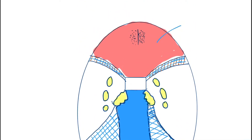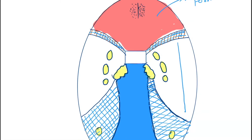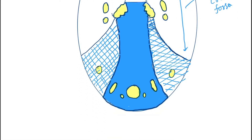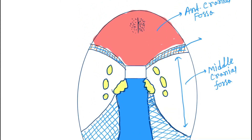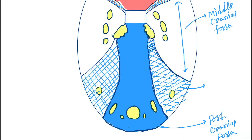This red part is called the anterior cranial fossa. This white part is called the middle cranial fossa. This blue part is known as the posterior cranial fossa. This part is known as the superior orbital fissure, and this part is known as the petrous part of the temporal bone.